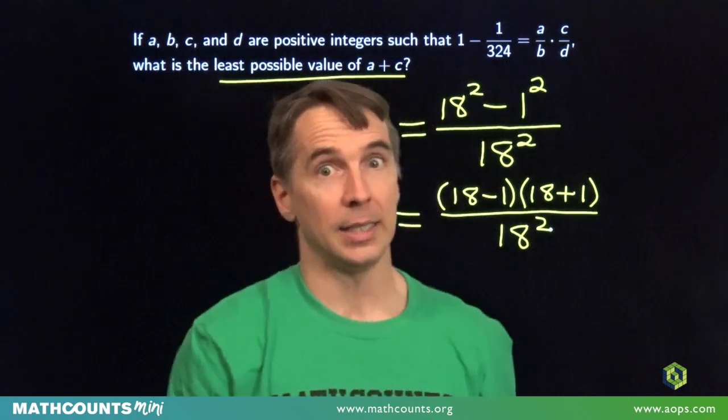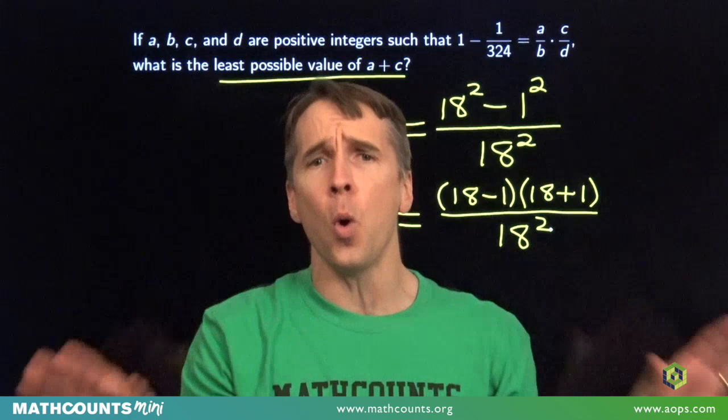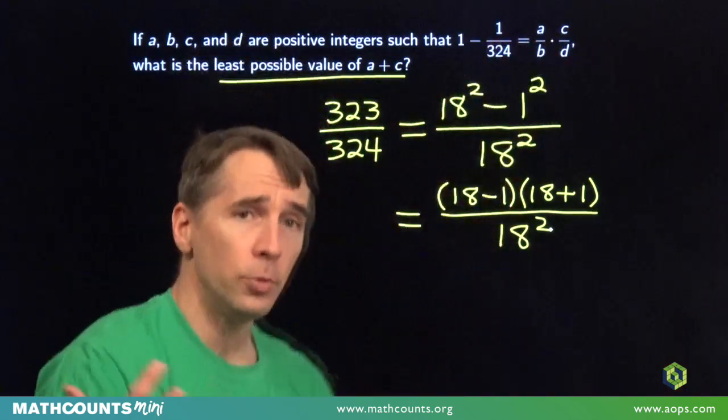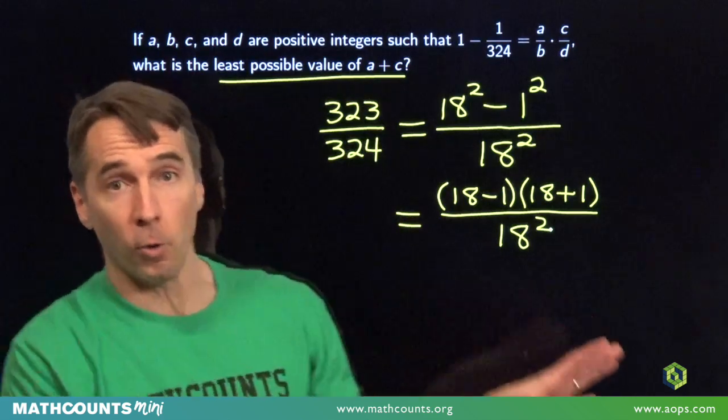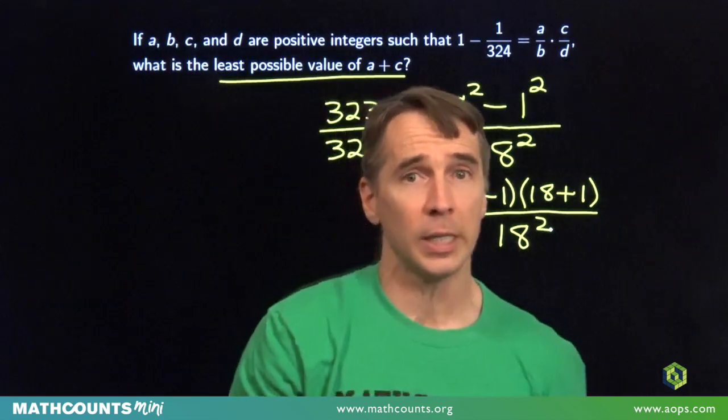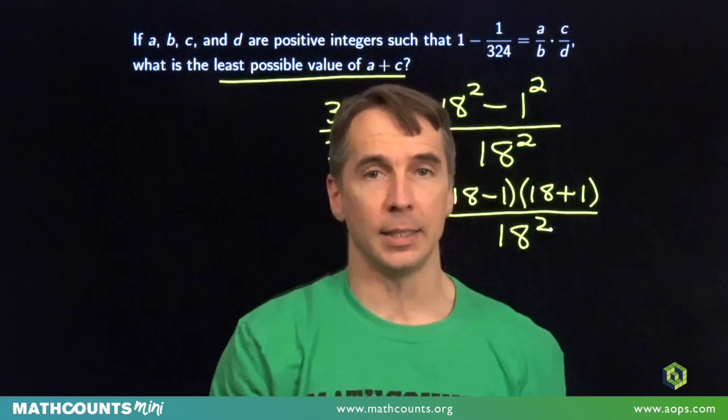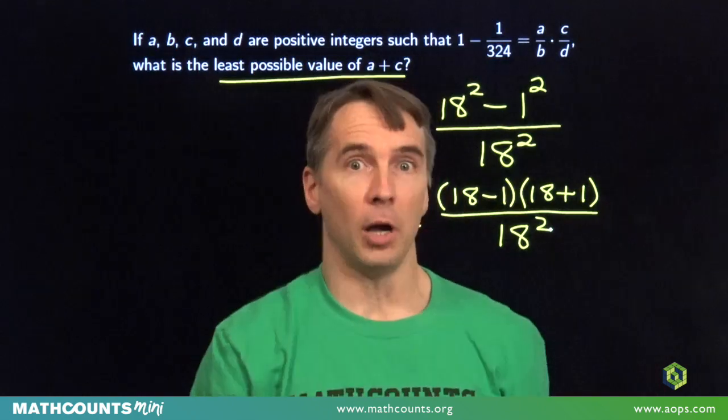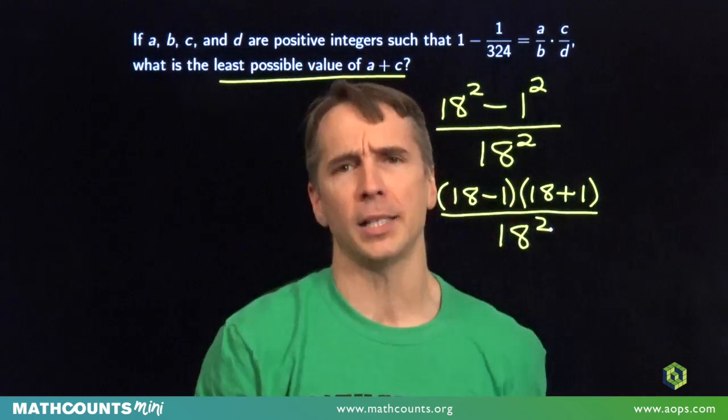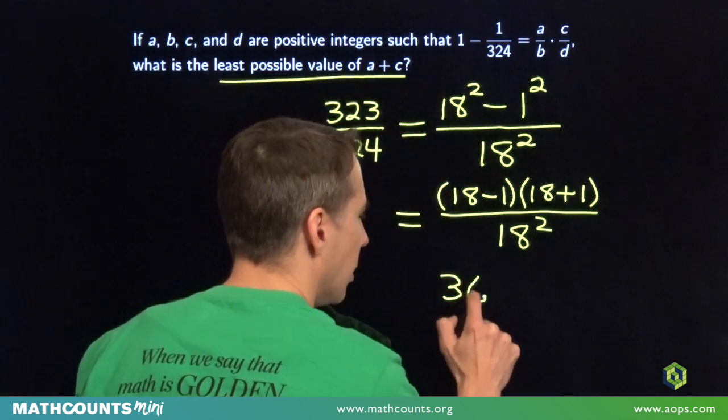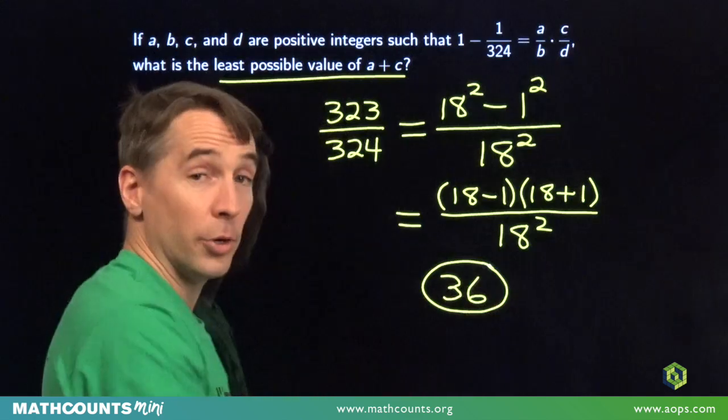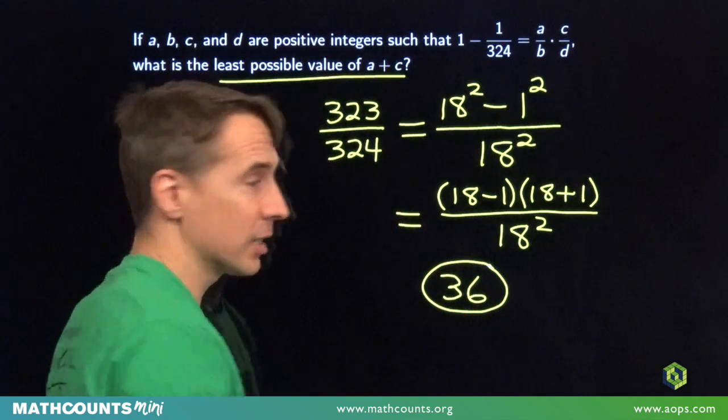323 is 17 times 19, and 17 and 19 are prime, so we know that there are no other ways to come up with two numerators that multiply to 323. Our only options are 1 and 323, or 17 and 19. And we want the sum of those two numbers to be as small as possible. So we're going to choose the 17 and the 19. Their sum is 36, and we're ready for the next problem.